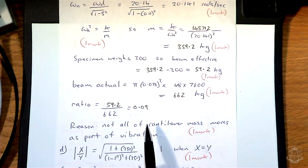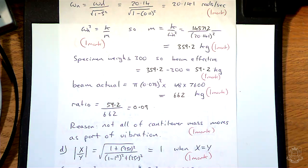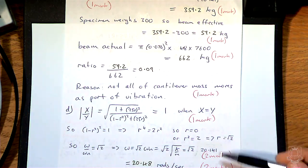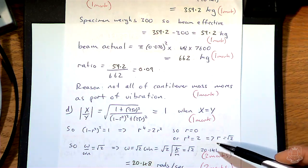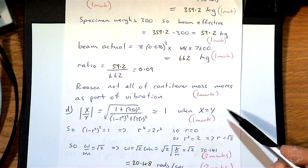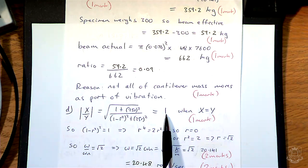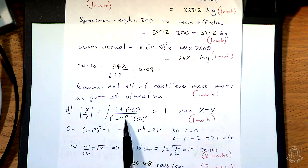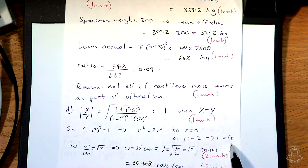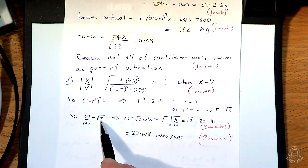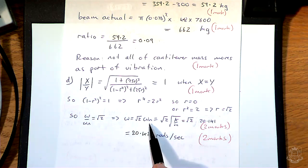The last part — finding the frequency when X equals Y — is deliberately quite tricky. Going back to the transmissibility notes, when X equals Y, the transmissibility equals 1. You can square both sides, multiply through, and find that either R equals 0 or R equals root 2. Since omega over omega_N equals R, we have omega equals root 2 times omega_N. We know omega_N from the data, so we can plug that in and get a final value. Only a few people will get all the way through these longer questions completely correctly.